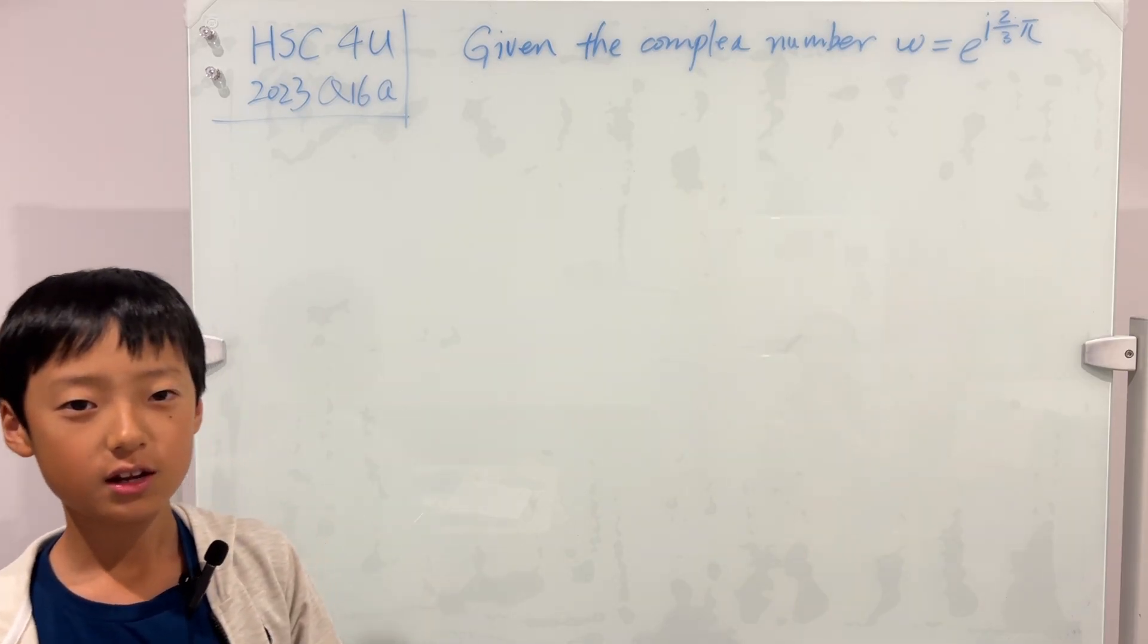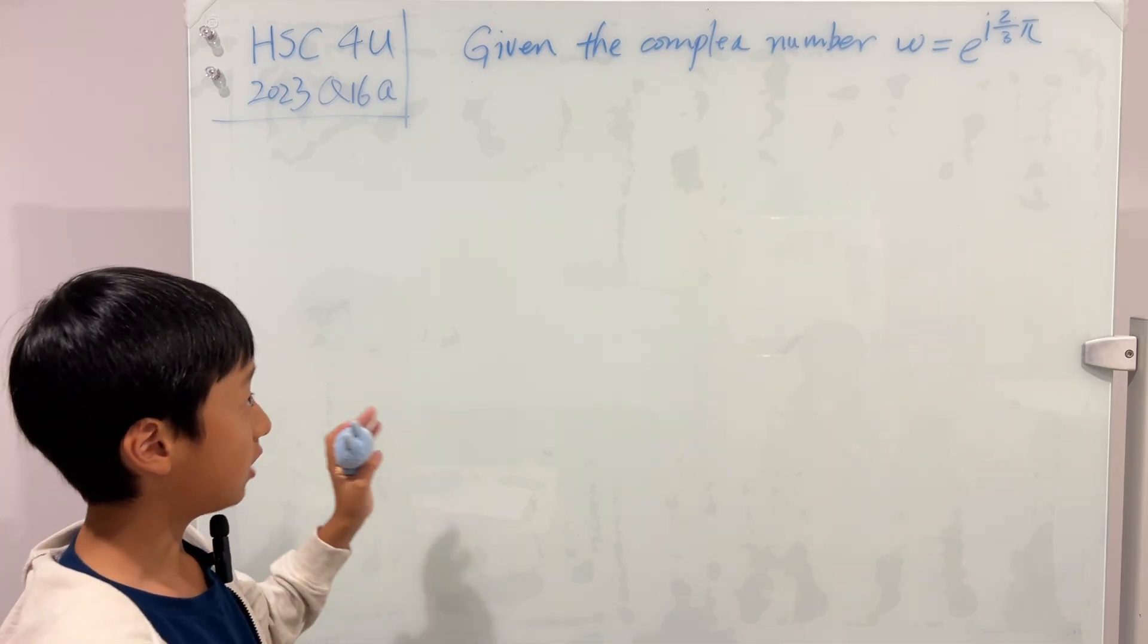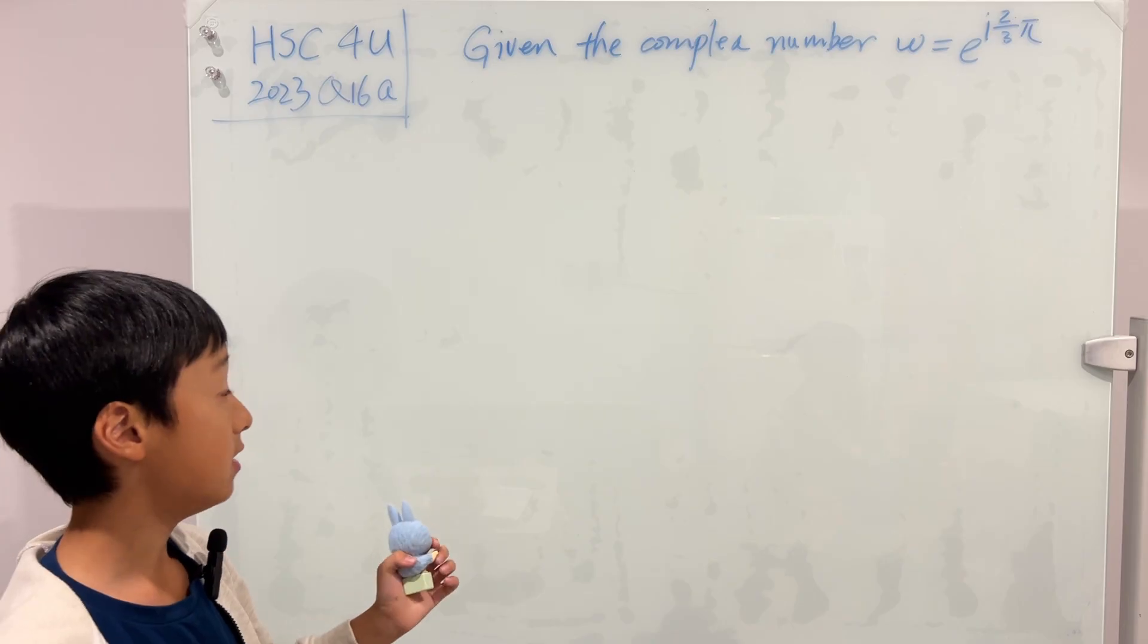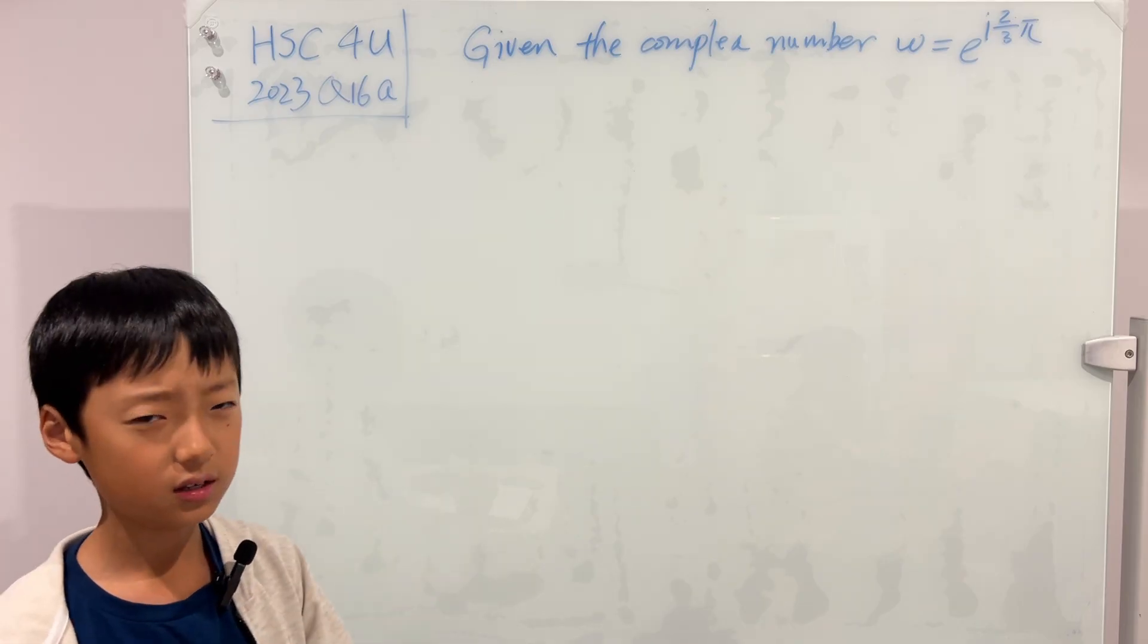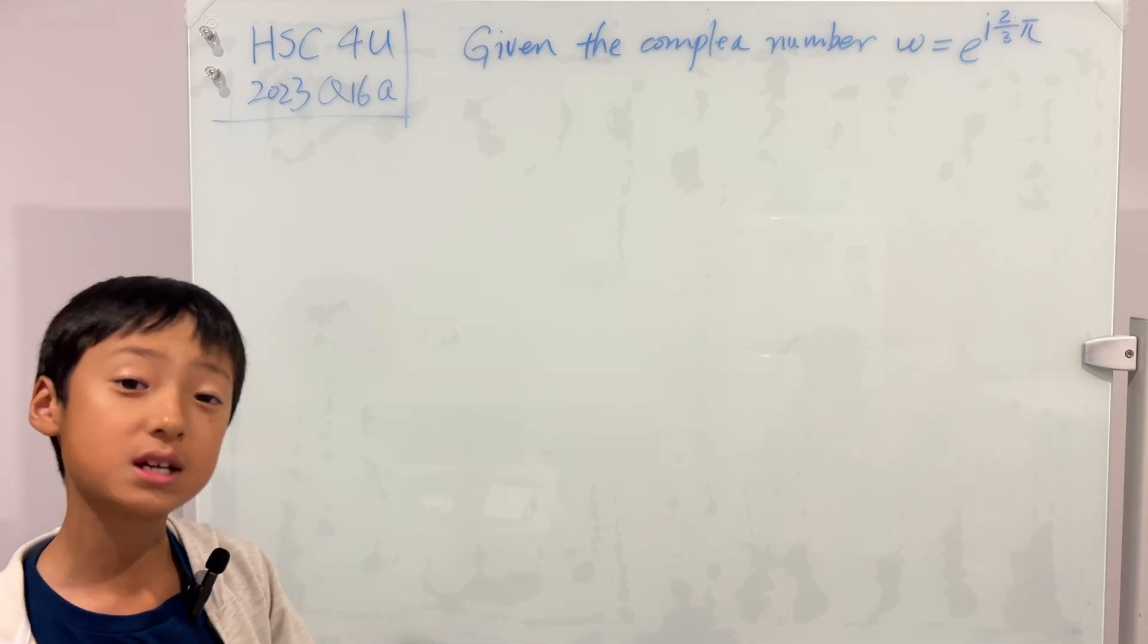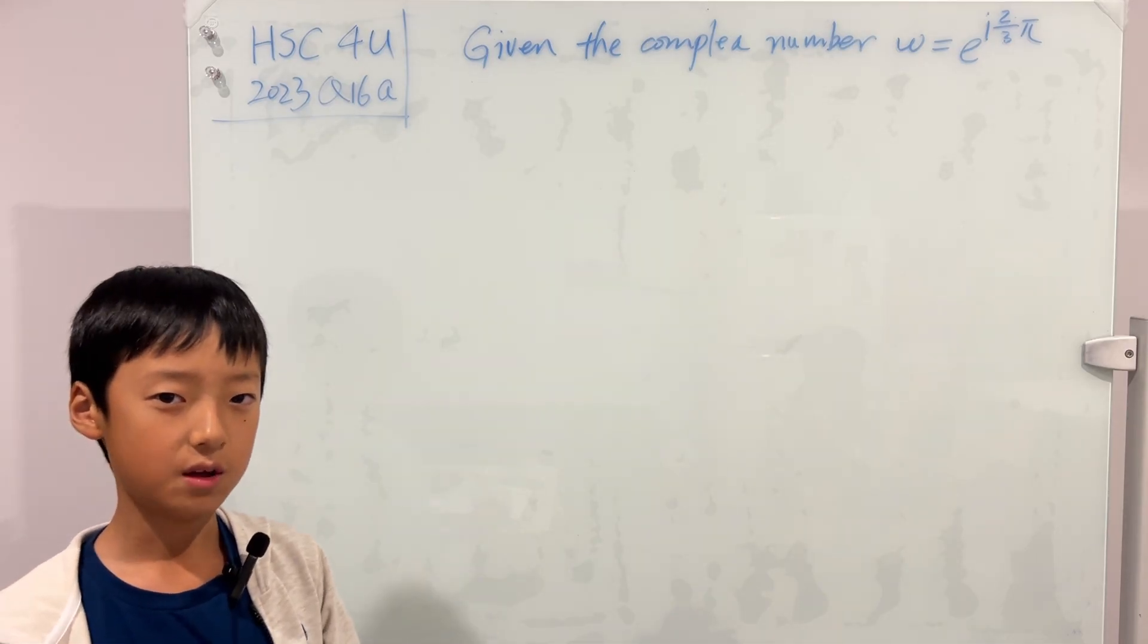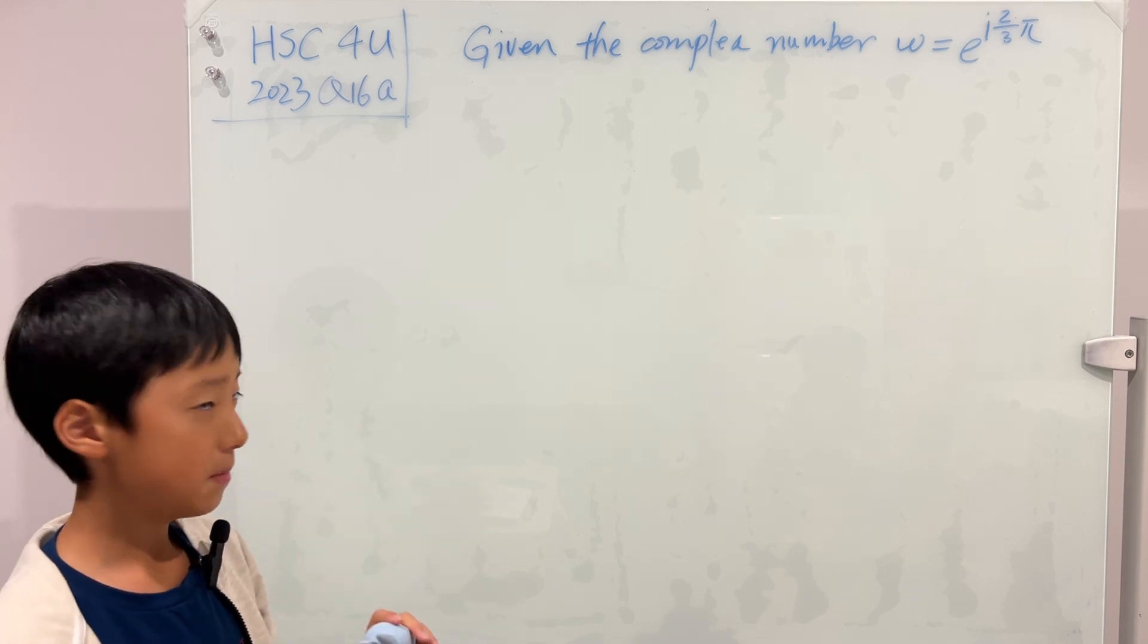So let's first read. The question says, given the complex number w is equal to e to the power of i times 2 over 3 pi, the question isn't complete, right? Well, that's okay, because I'm going to explain the i and ii later, because right now we're going to do some observing.